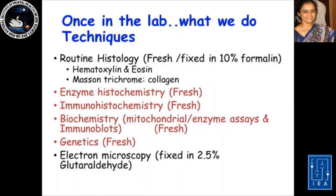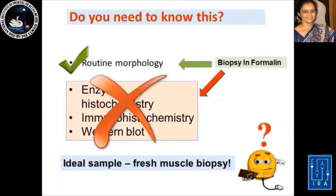Once in the lab, there are several techniques we need to use to optimally read the muscle biopsy. We have routine histology, which can be done on fresh as well as formalin-fixed muscle biopsies. We also have several tests which are much more important than routine histology: enzyme histochemistry, immunohistochemistry, biochemistry particularly for mitochondrial enzyme assays, and genetic studies. All of these last four tests can only be done on a fresh muscle biopsy — they cannot be done on tissue fixed in formalin or glutaraldehyde. The only use of glutaraldehyde fixation is to perform electron microscopy. Each type of test provides very specific information, and this will dictate how useful the final report will be for your patient management.